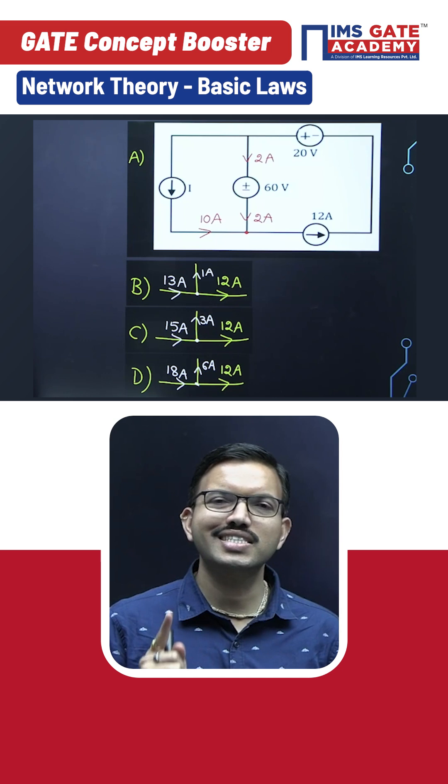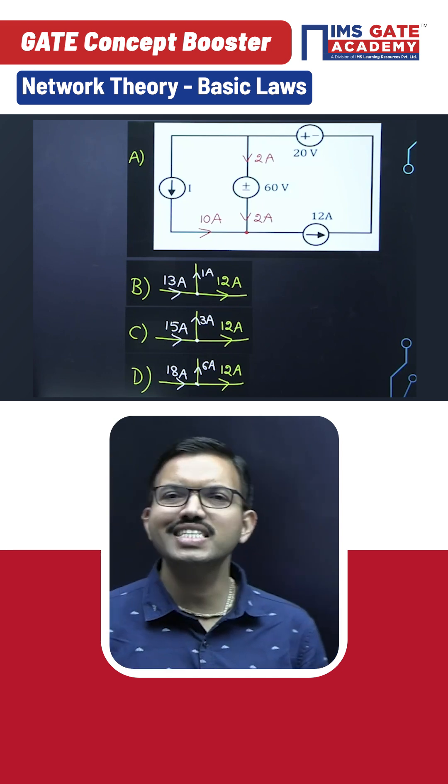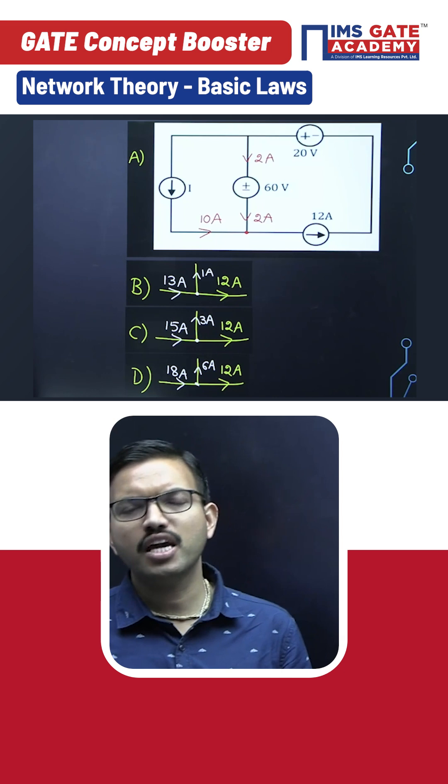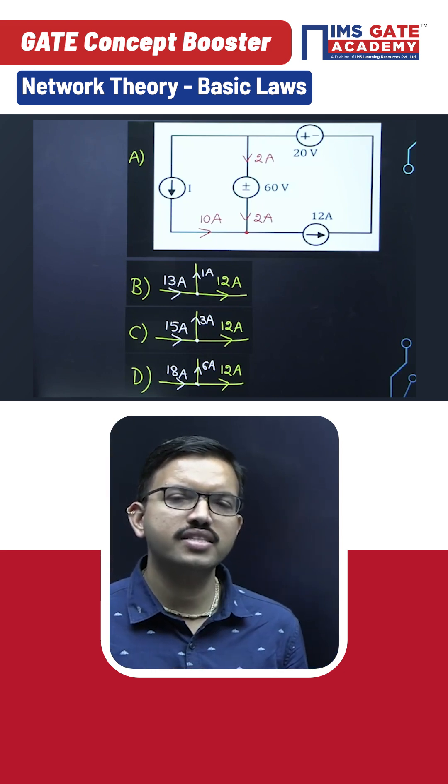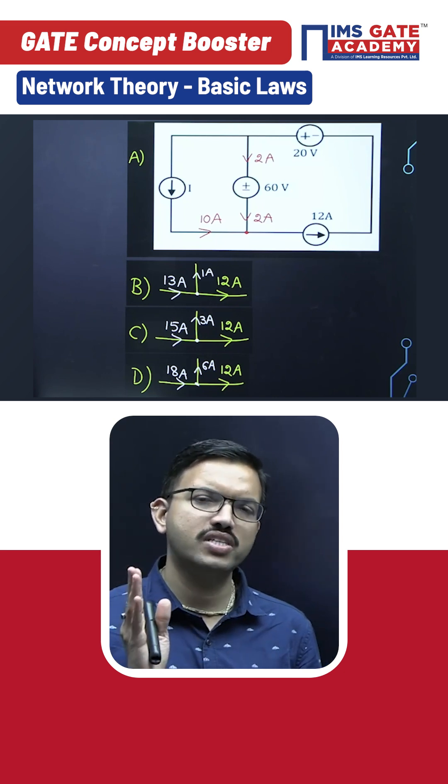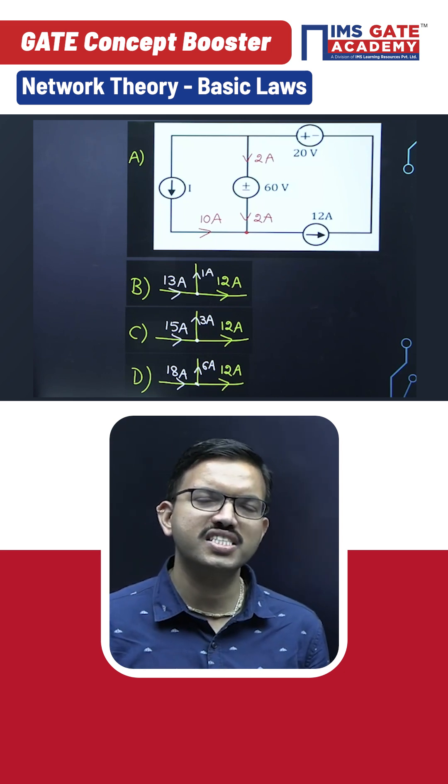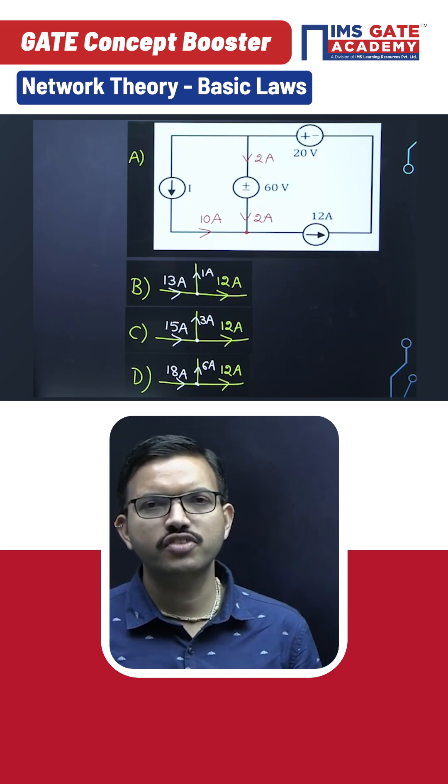Since in this question they asked clearly that 60 volts should absorb the power, option A is the correct one. Nowadays you are having MSQ type questions. For the same circuit, suppose if they ask you to find the i value such that the 60 volt source is delivering power, in that case options B, C, D would be correct. I hope it is clear for everyone. Thank you for watching.